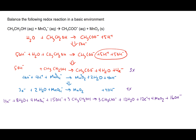Now things start to cancel: the 12 electrons on both sides cancel out. We have 8 water molecules on the reactant side and 12 on the product side, so the 8 cancel and the product side goes from 12 down to 4. The MnO4- stays. For OH-, 15 on the reactant side and 16 on the product side cancel down, leaving 1 OH- on the product side. The cleaned-up balanced reaction is: 4MnO4- plus 3CH3CH2OH forms 3CH3COO- plus 4H2O plus 4MnO2 plus OH-.